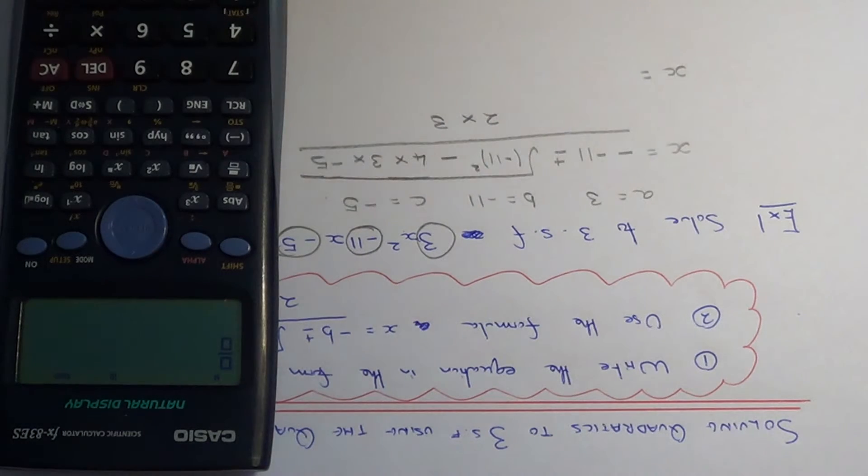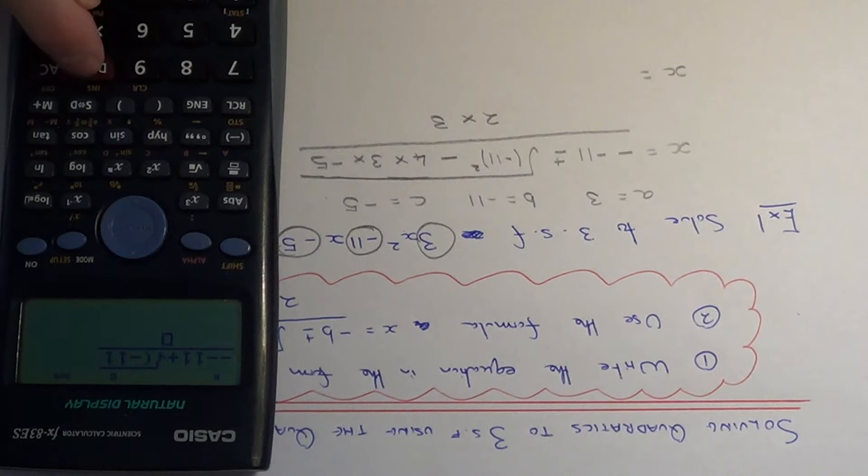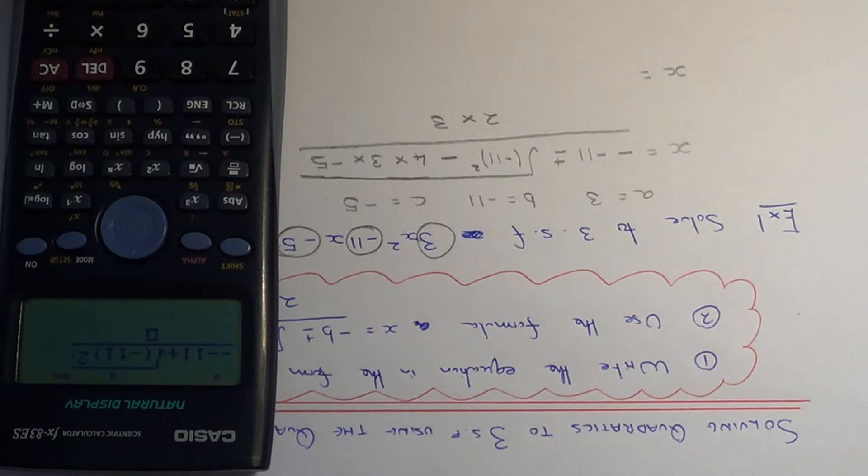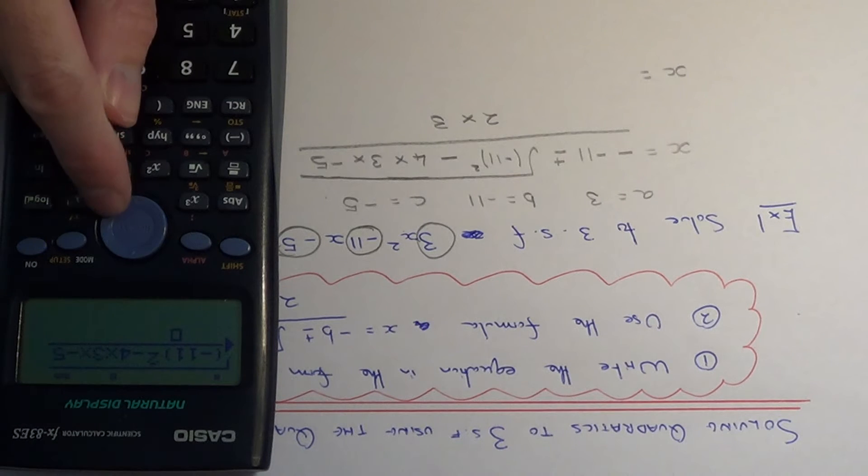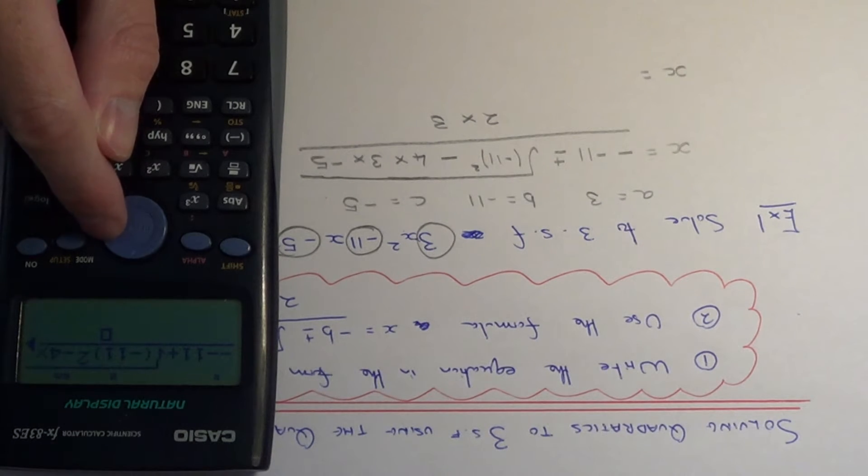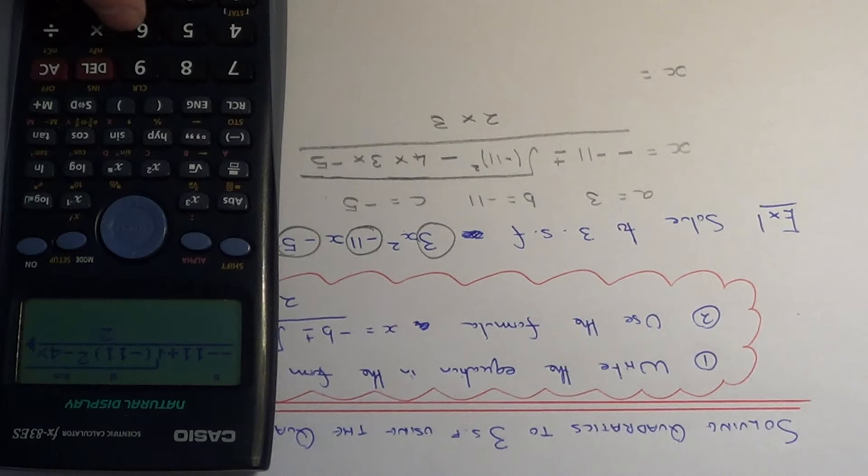Hit your fraction button. We've got minus minus 11, so we need to do plus first and then go back and change it to a negative later. So plus the square root of minus 11 squared minus 4 times 3 times minus 5. Let's go to our next line - this is over 2 times 3.